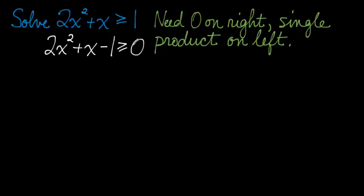Getting a 0 on the right is easy enough. All I need to do is subtract 1 from both sides, and to get that single product, I'm going to factor that quadratic into two linear factors.